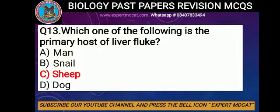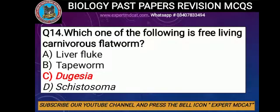Question number 14: Which one of the following is a free-living carnivorous flatworm? Options: A) Liver fluke, B) Tapeworm, C) Dugesia, D) Schistosoma. The correct option is C, Dugesia, which is a free-living flatworm whose outer surface is ciliated.